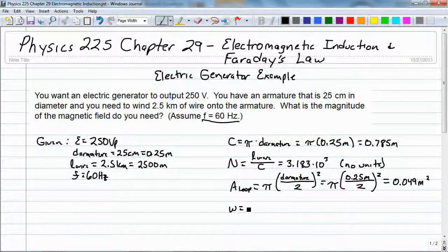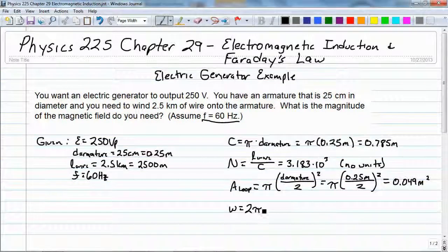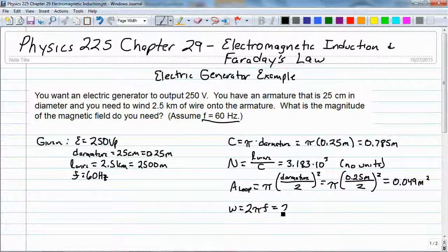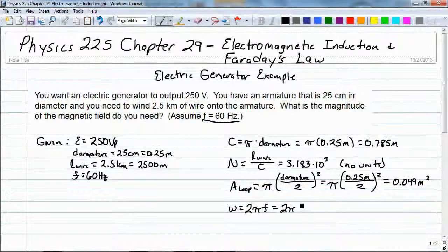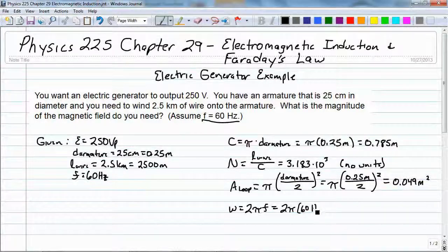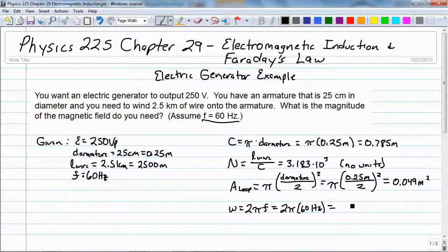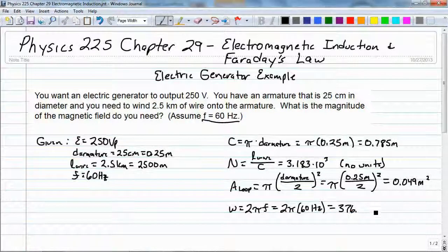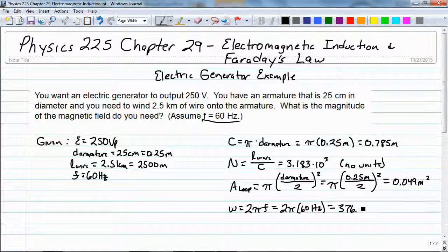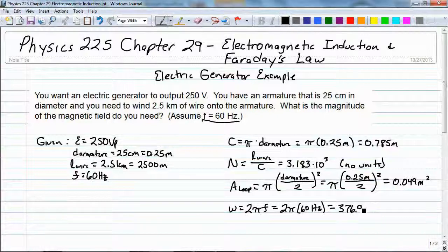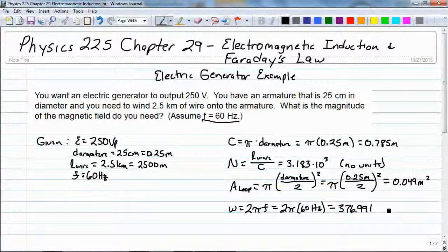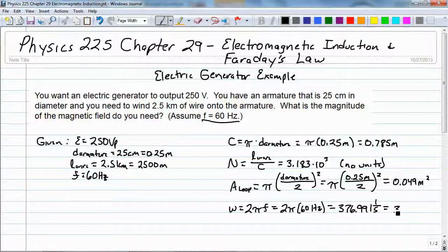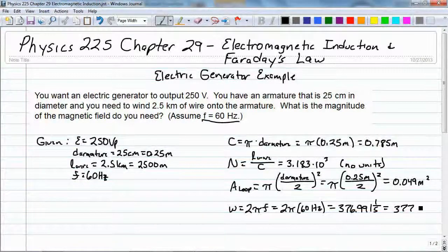Omega is just 2 pi times the frequency. And that equals 376.991 per second, so that's equal to 377.